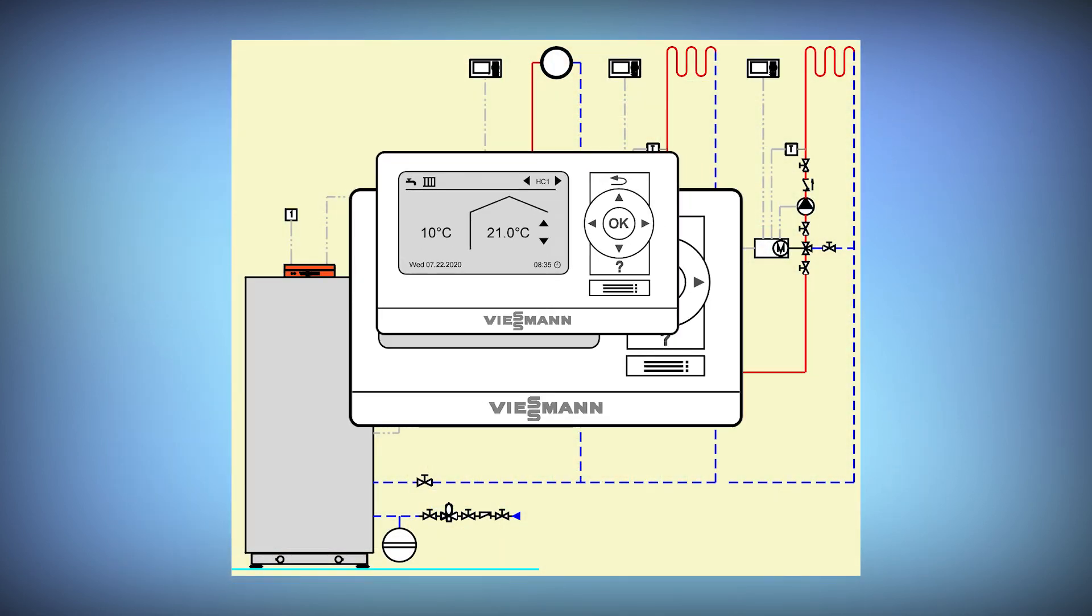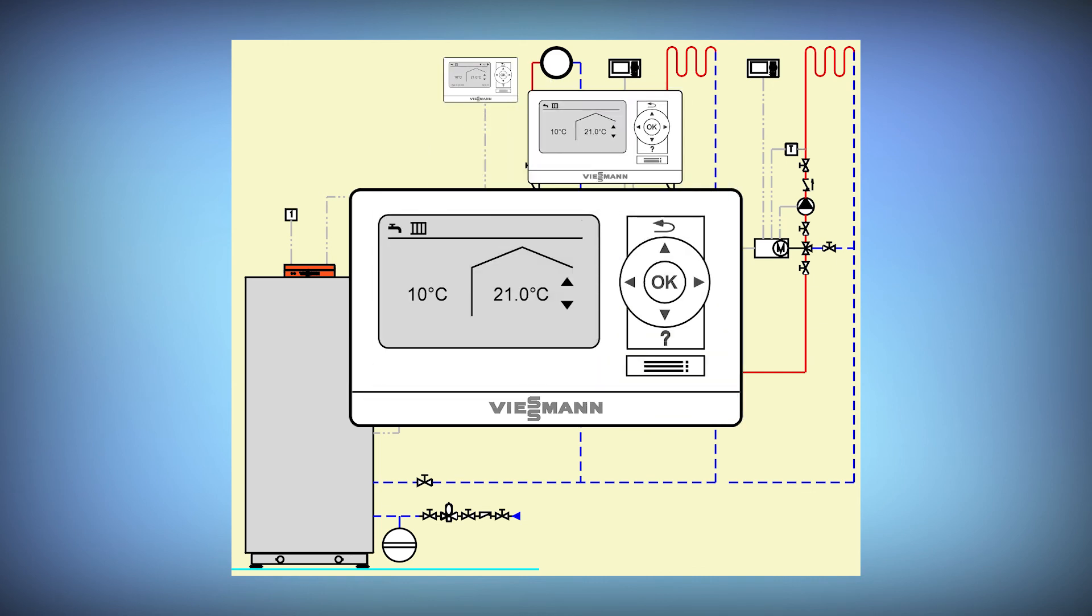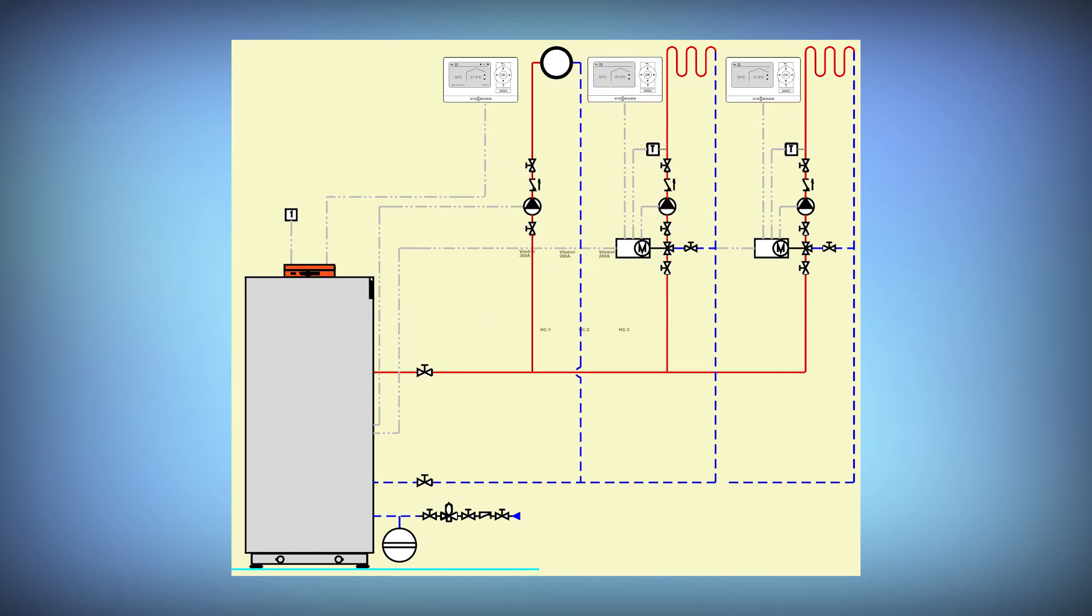Vitatrol room sensing devices work with any Vitatronic control with mixed and non-mixed loops using the traditional Wiesmann heating circuit layouts.